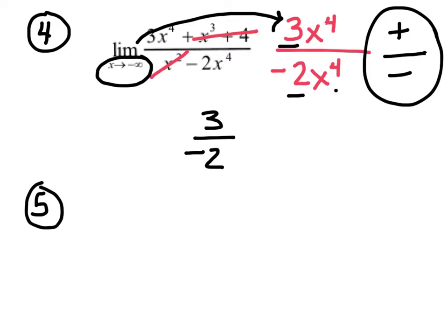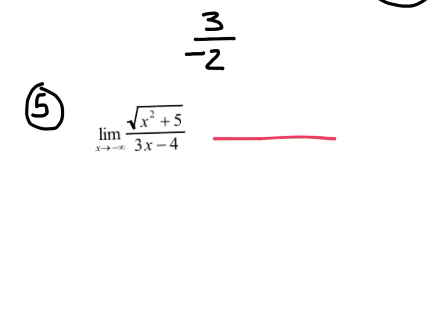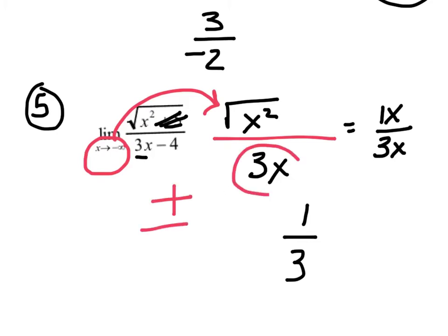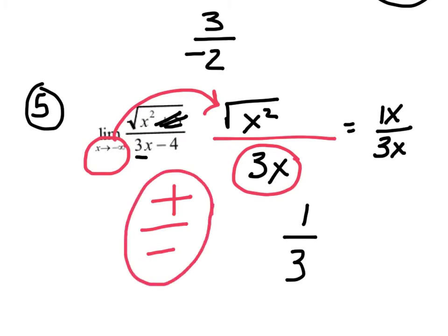Watch how sneaky this next one is. Looking for the biggest term on the bottom — 3x. On top, forget the radical: biggest inside is x squared, so the square root of x squared, which simplifies to x. So I have x over 3x — ratio of coefficients gives 1 third. But plug in negative infinity: squaring gives positive on top, and plugging into the bottom gives negative. So the answer is actually negative 1 third.